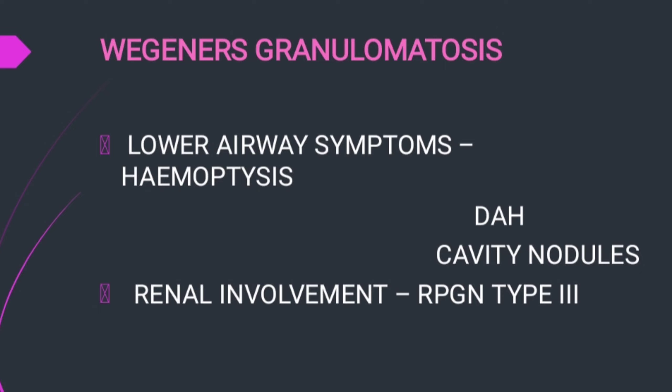Kidney involvement is also seen in this condition. We often see rapidly progressing glomerulonephritis type 3 — RPGN type 3 — which is pauci-immune, as seen in Wegener's Granulomatosis. On histology of the kidney, crescent formation will be seen.